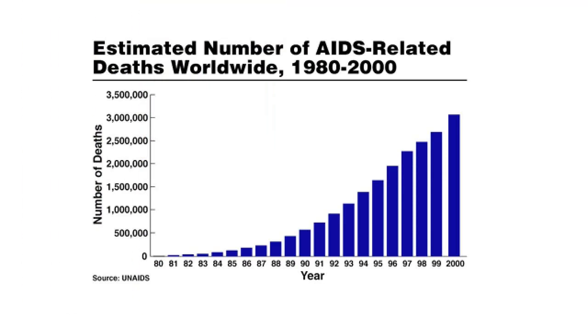This observation led scientists to suspect that HIV has not been a human virus for very long. If it was a virus with a lot of history with humans, it's unlikely that it would still be so pathogenic.